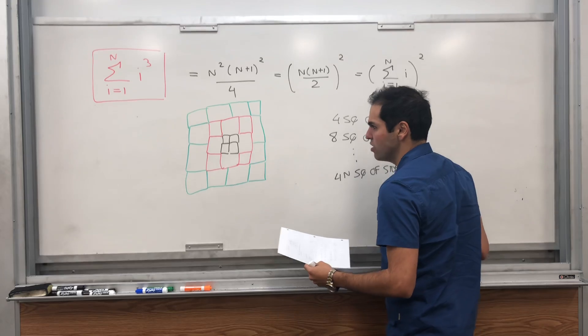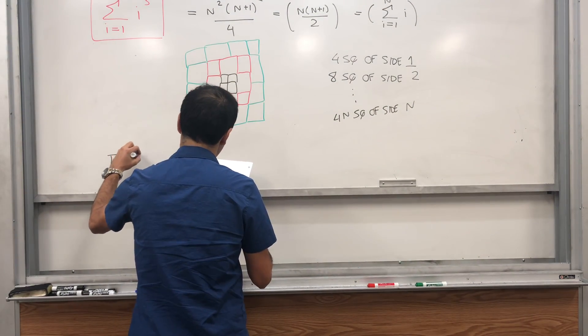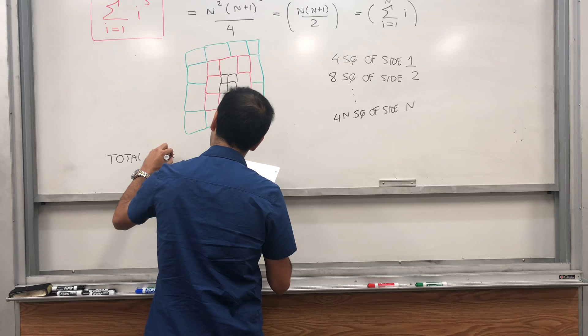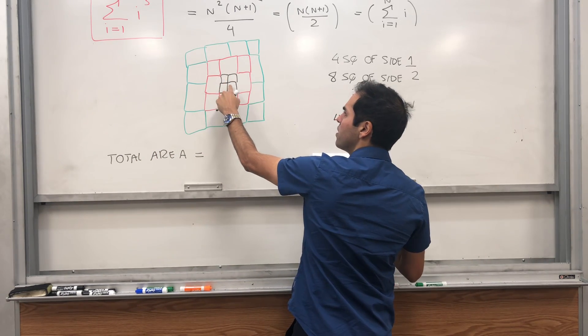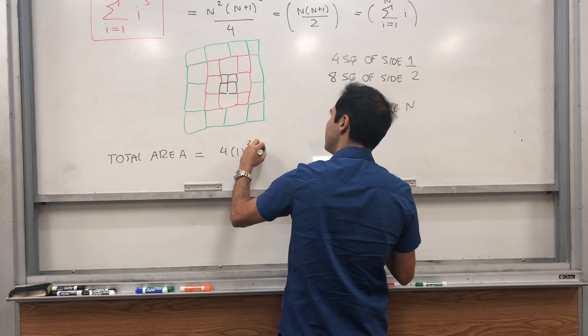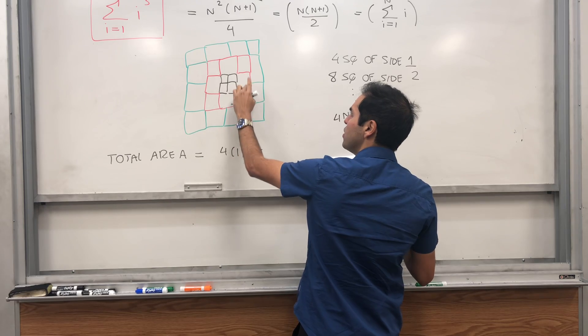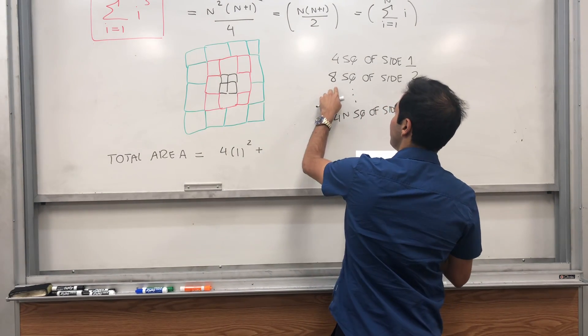Because on the one hand, what is the total area? All you do, you first sum up the squares of side 1. And there are four of them. So 4 times 1 squared.